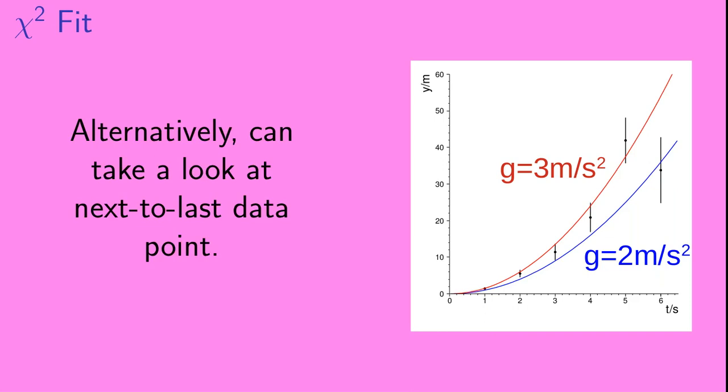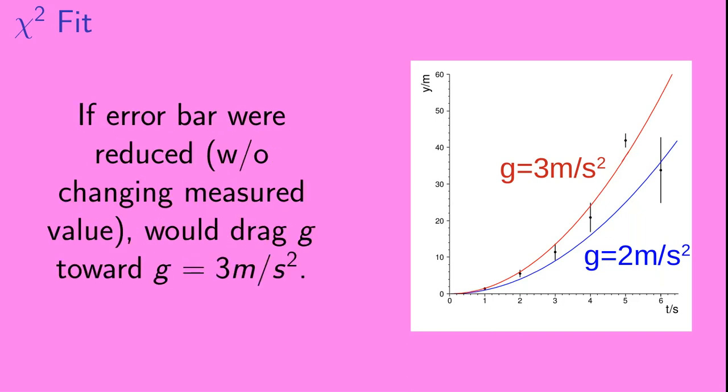Alternatively, we can also take a look at that next to last data point. If the error bar on this data point were reduced, again without changing the measured value, that would drag g toward g equals 3 meters per second squared.